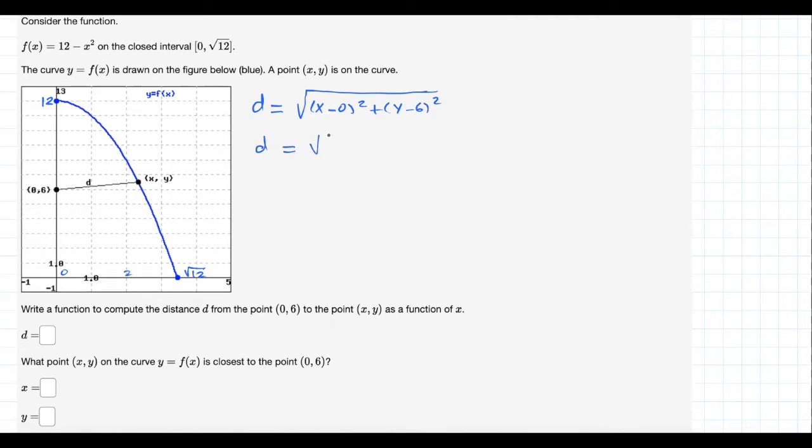Great. Now, simplifying, it's not hard to see that this becomes x squared plus (y minus 6) squared. Great. Now, they want this function to be written only in terms of x. It's not a problem because we have y equals 12 minus x squared, right?